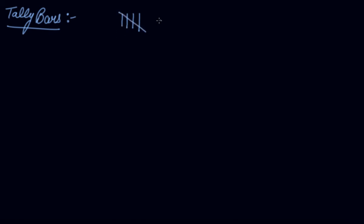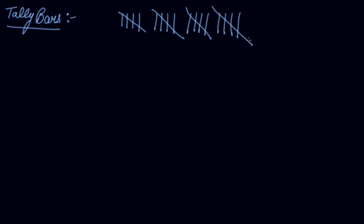Now let's understand what tally bars are. For 1 occurrence you write one mark, for 2 you write two marks, for 3 you write three, for 4 you write four. When an item occurs 5 times, you draw a diagonal line across the four marks. Then you start again for 6, 7, 8, and so on up to 20. These are called tally bars.